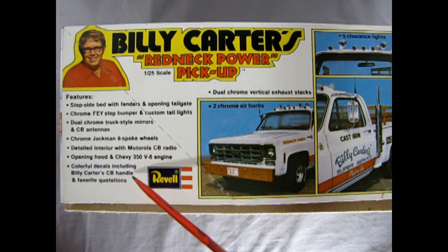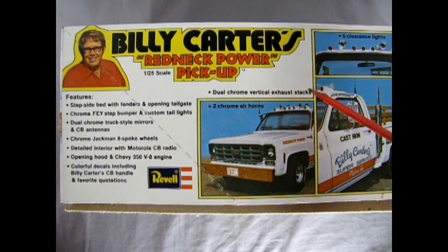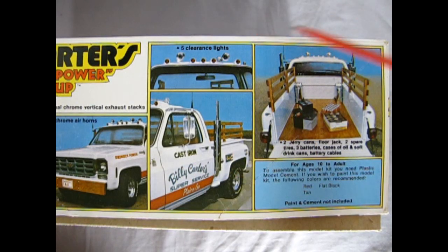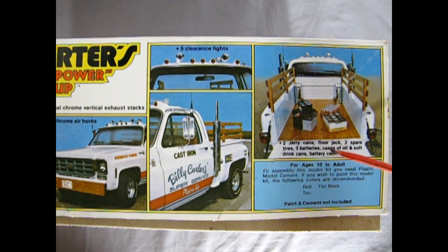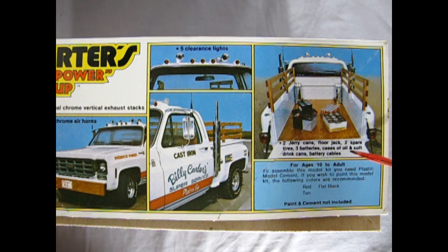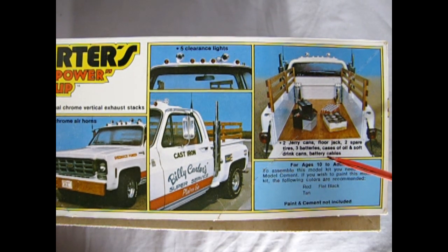Colorful decals including Billy Carter's CB handle and favorite quotations, dual chrome vertical exhaust stacks, two chrome air horns, five clearance lights and two jerry cans, floor jack, two spare tires, three batteries, cases of oil and soft drink cans, Billy Beer cans maybe, and battery cables.